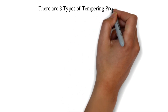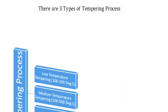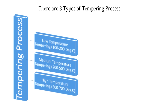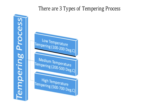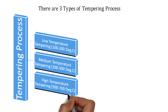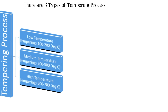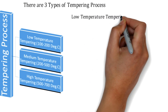There are basically three types of tempering process. The first is low temperature tempering, done at 100 to 200 degrees Celsius. The next is medium temperature tempering, done at 200 to 500 degrees Celsius. The last is high temperature tempering, typically done at 500 to 700 degrees Celsius. The only difference between these types is the temperature range, and the tempering process is divided accordingly.